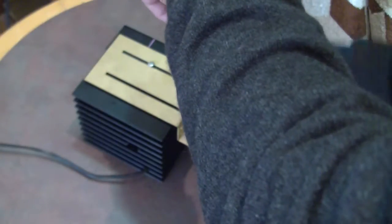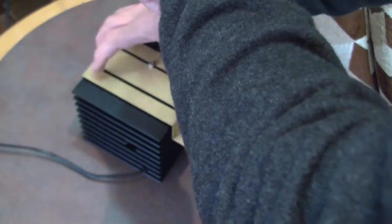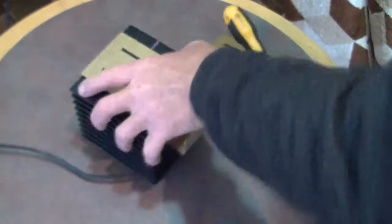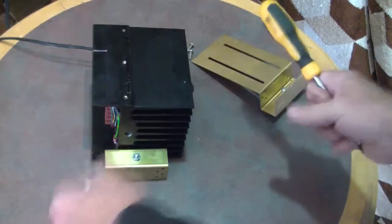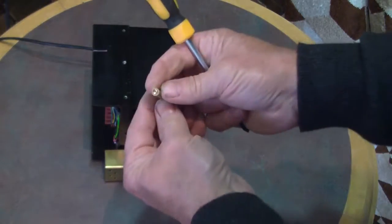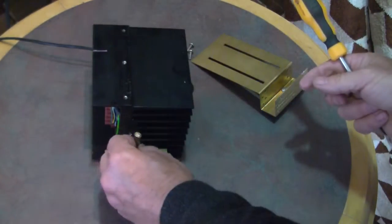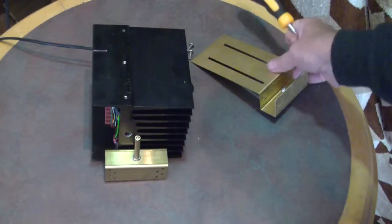So once we've got those two screws in we can turn the whole thing over and put the other bracket in. These brackets are identical, but they have a left and a right hand slot so that they can be used either side of the assembly.